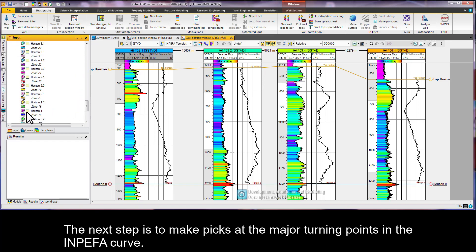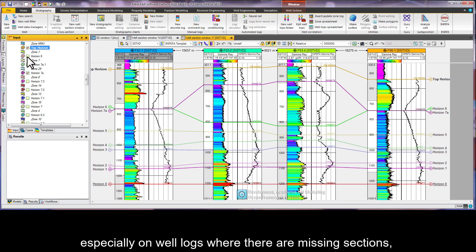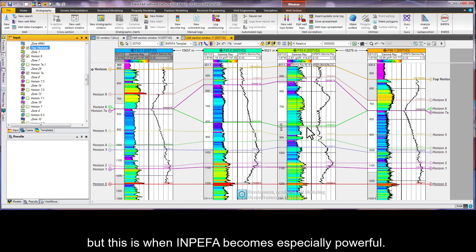The next step is to make picks at the major turning points in the INPEFA curve. It can be initially quite hard to decide which peaks on one well correlate to peaks on the others, especially on well logs where there are missing sections. But this is where INPEFA becomes especially powerful.